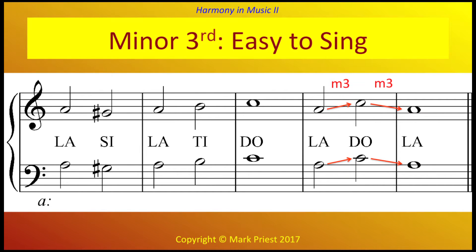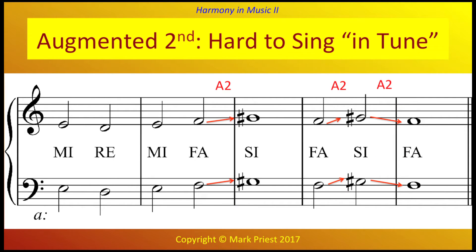In summary, a diatonic minor third is easy to sing, as it is simply a whole tone plus a semitone. Try singing along with these tones: La, Si, La, Ti, Do, La, Do, La. On the other hand, singing the augmented second is extremely difficult for a group of singers to sing together in tune. If you try singing this yourself, together with another person, you'll hear what we mean: Mi, Re, Mi, Fa, Si, Fa, Si, Fa.